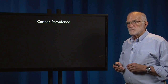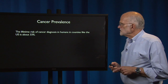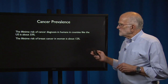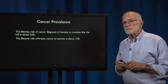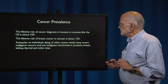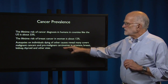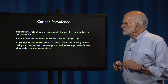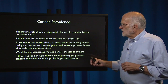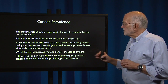Now, what about the prevalence of cancer? The lifetime risk of being diagnosed with cancer in a country like the United States is about one-third. The lifetime risk of breast cancer in women is about 12%, about one in eight. Autopsies on individuals who died of other causes reveal many covert malignant cancers and pre-malignant carcinomas in prostate, breast, kidney, thyroid, and other sites. We all have precancerous mutant clones — thousands of them. If they lived long enough, all men would probably get prostate cancer and all women would probably get breast cancer.